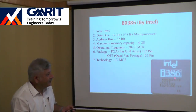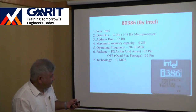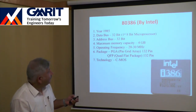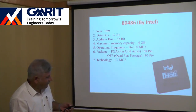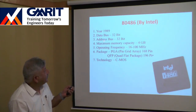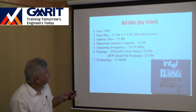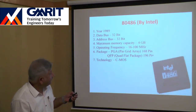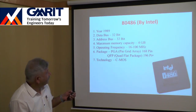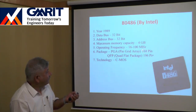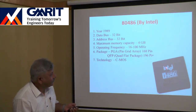After the 80386, Intel launched the 80486 in 1989. The data bus is 32-bit, the address bus is 32-bit, and the maximum memory capacity is 4 GB. The operating frequency was increased to 16–100 MHz. The PGA package now had 168 pins, and the QFP had 196 pins. Technology was CMOS.